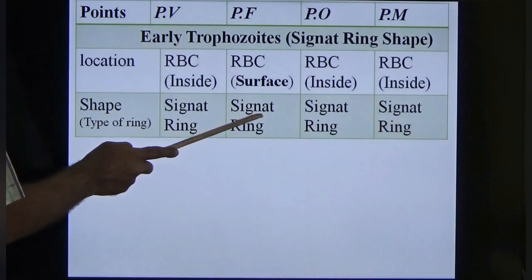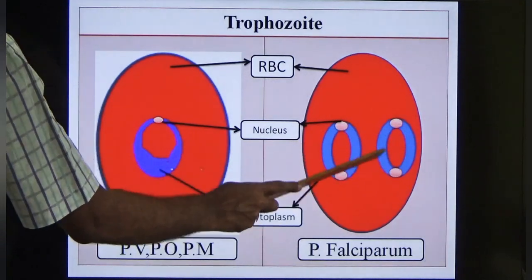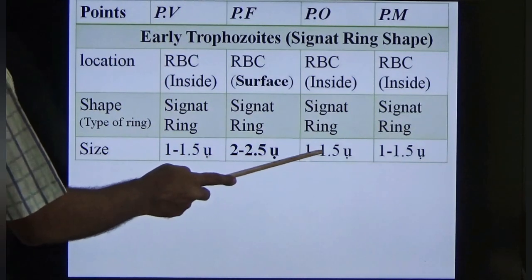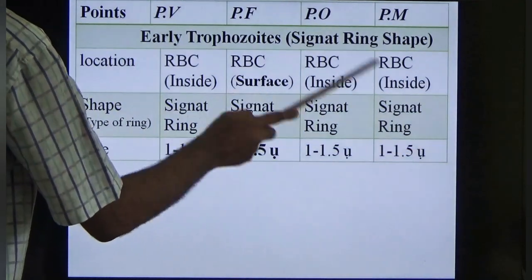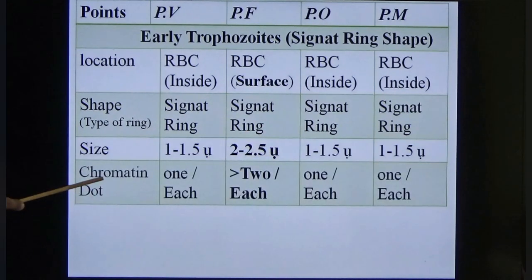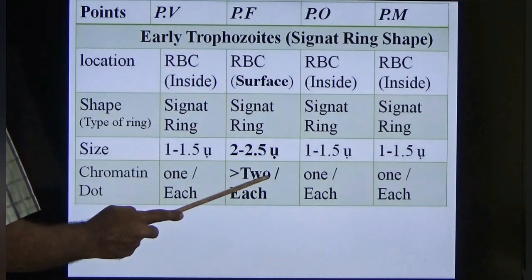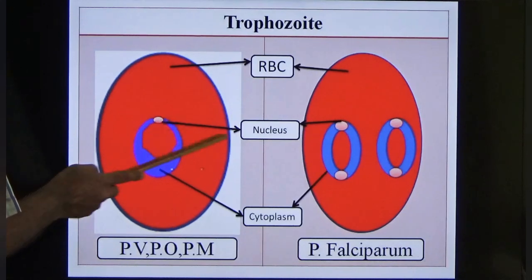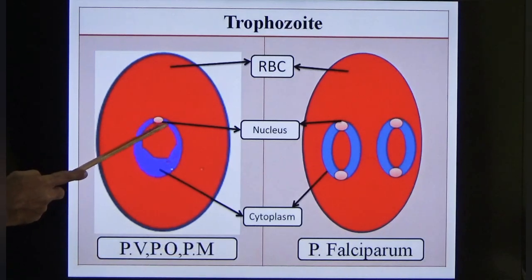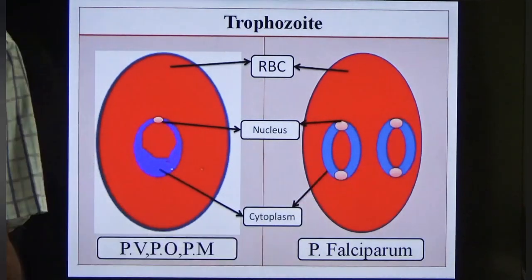The shape is known as the signet ring for all four species. In terms of size, Plasmodium vivax is 1 to 1.5 microns; ovale and malariae are similar; but Plasmodium falciparum is 2 to 2.5 microns. Chromatin dot (the nucleus): vivax, ovale and malariae have 1 chromatin dot, but falciparum has 2 or more than 2 chromatin dots (nuclei).